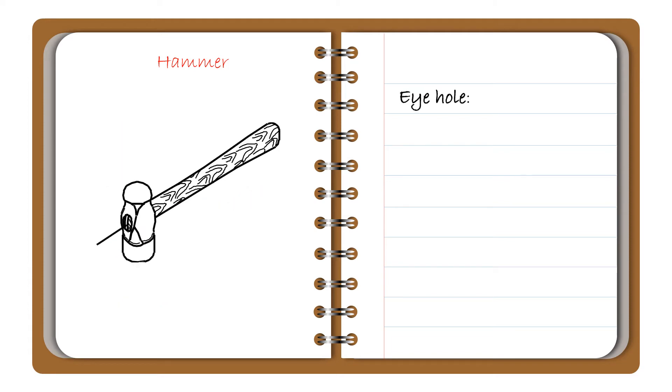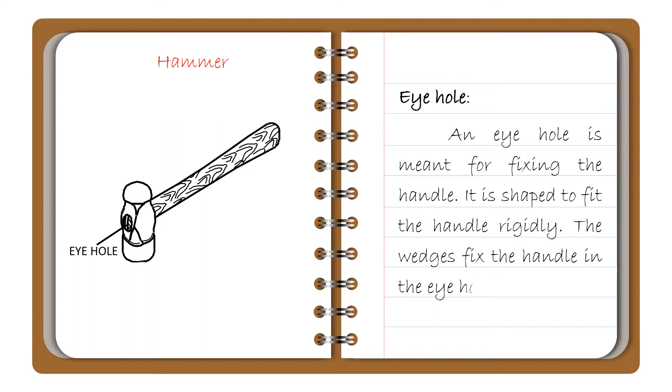And the last type is eye hole. An eye hole is meant for fixing the handle. It is shaped to fit the handle rigidly. The wedges fix the handle in the eye hole.